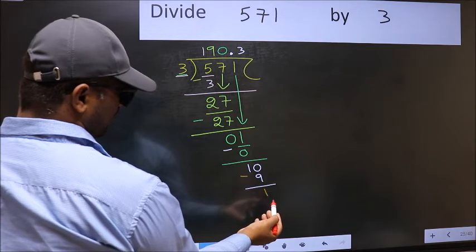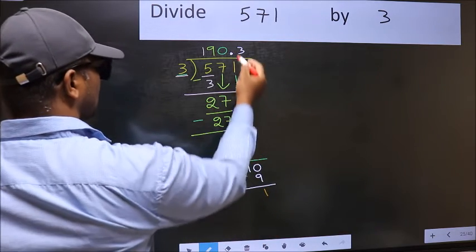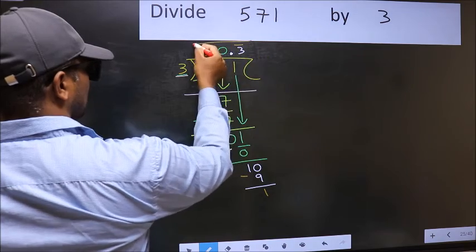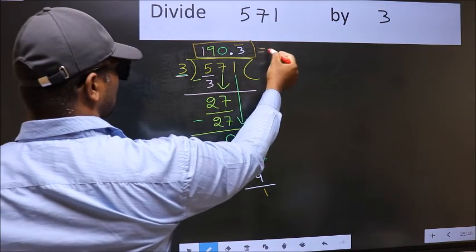We got 1 again. That means we get bar on this number. So this is our quotient.